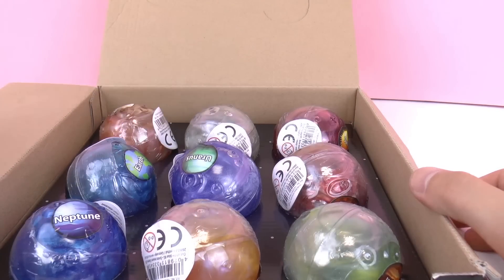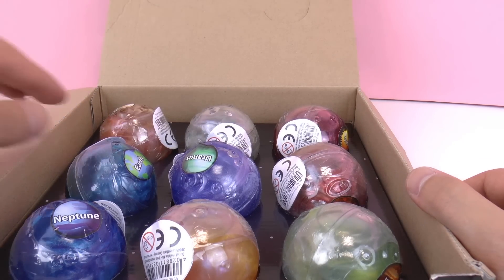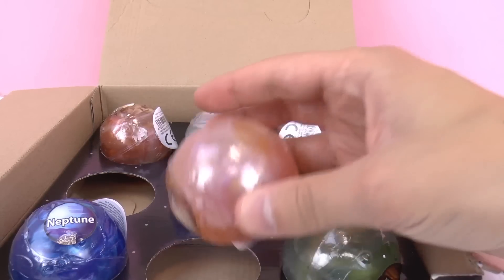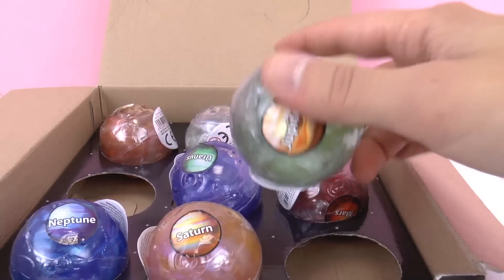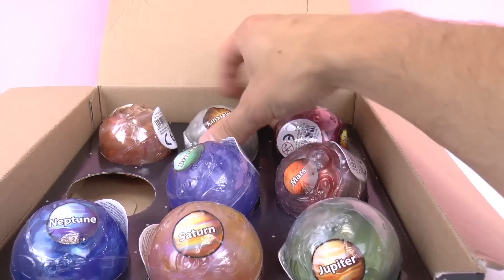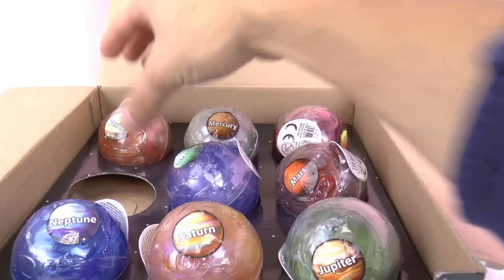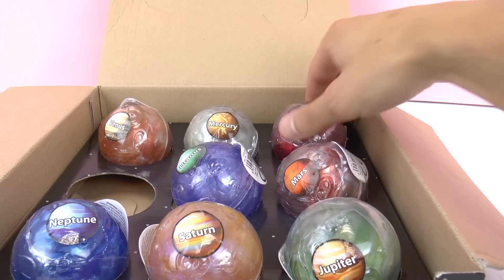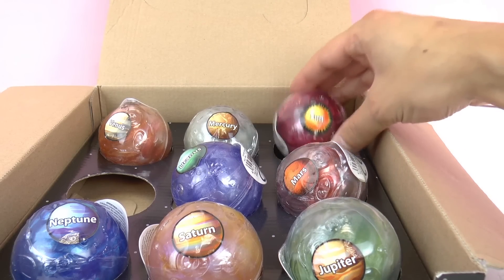As you can see, there are nine putty planets included. Let's look at all of them. Here we have Neptune, Saturn, Jupiter, Mars, Uranus, Mercury, Venus, and here in the corner we have the Sun. Super cool!